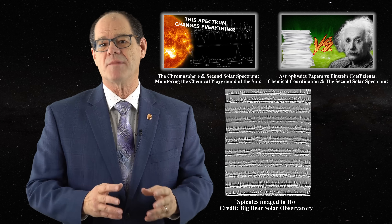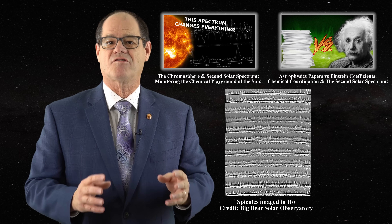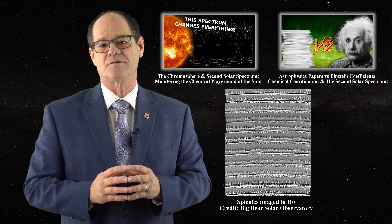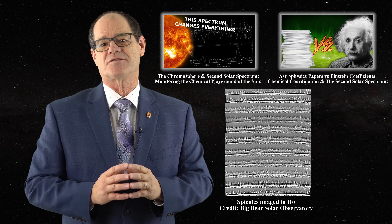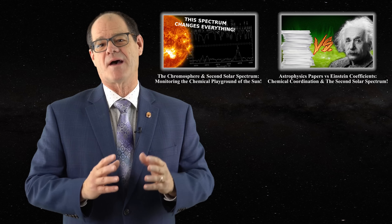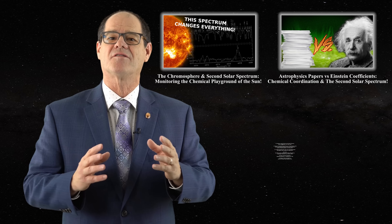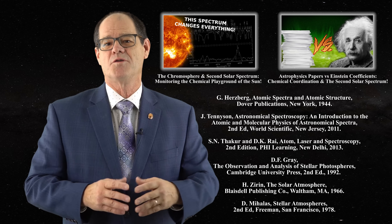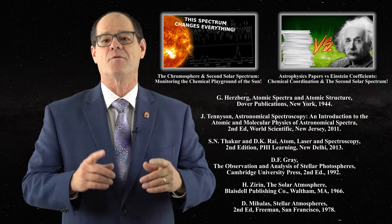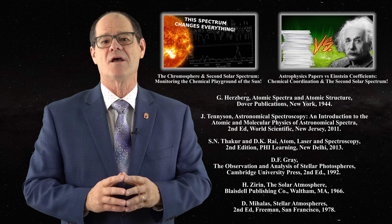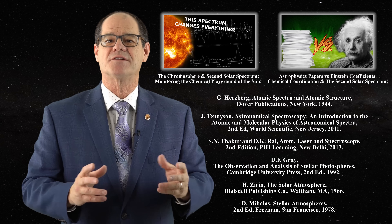Therefore one cannot make use of Einstein coefficients measured in the laboratory and then apply them to the Sun, the stars, or to nebular clouds. As mentioned in the second video, this invalidates thousands of papers in astrophysics. For those interested in the mathematics of spectroscopic line formation in astrophysics, you are free to consult several classic works on the subject. When you combine this mathematical reality with the presence of spicules in the chromosphere, the consequences for astrophysics are tremendous.